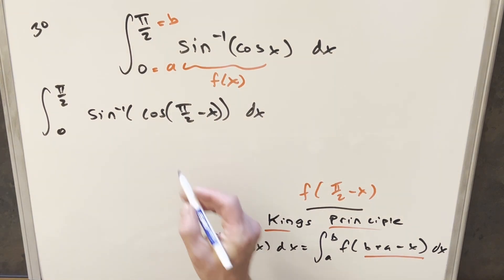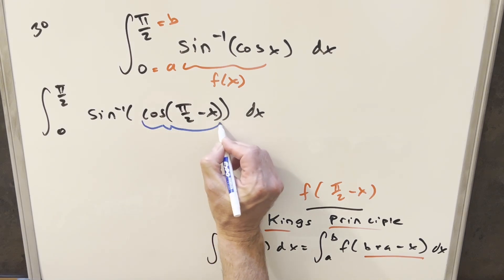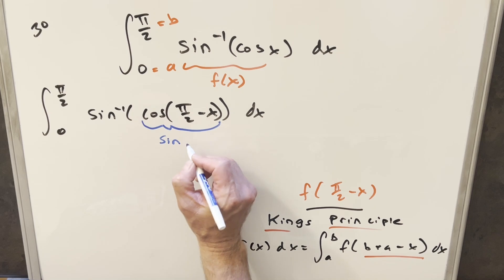But the nice thing about that, this right here, we can use complementary angle formula. Cosine pi over 2 minus x. The formula tells us this is the same thing as sine of x. So we can just go ahead and rewrite this over here.